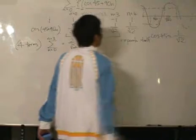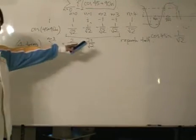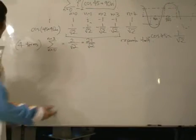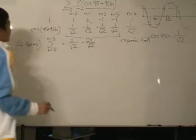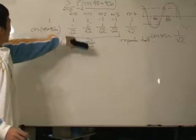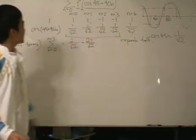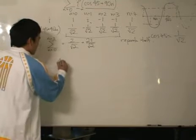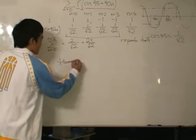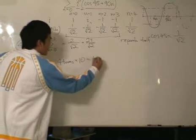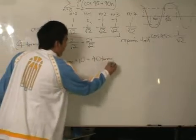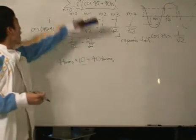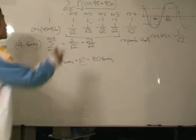So what is the next step? Logically, the next step is to find how many times it repeats itself. We have 41 terms, and every 4 terms it repeats itself. That means if I write 4 terms times 10, that equals 40 terms. Why times 10 and not times 11? Because if I times 11 I'd get 44 terms and I would overshoot the summation.